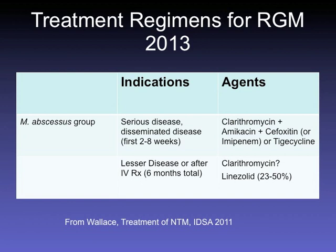Classic treatment regimens for M. abscessus in serious disseminated disease: first two to eight weeks of induction therapy usually with a macrolide — assuming susceptibility — plus amikacin, plus either cefoxitin or imipenem, sometimes tigecycline. Those are your only options. After the first eight weeks, put them on a maintenance regimen for six months: macrolide if susceptible, sometimes linezolid. Using linezolid for six months is difficult due to toxicities, so typically use once-daily linezolid and monitor closely.